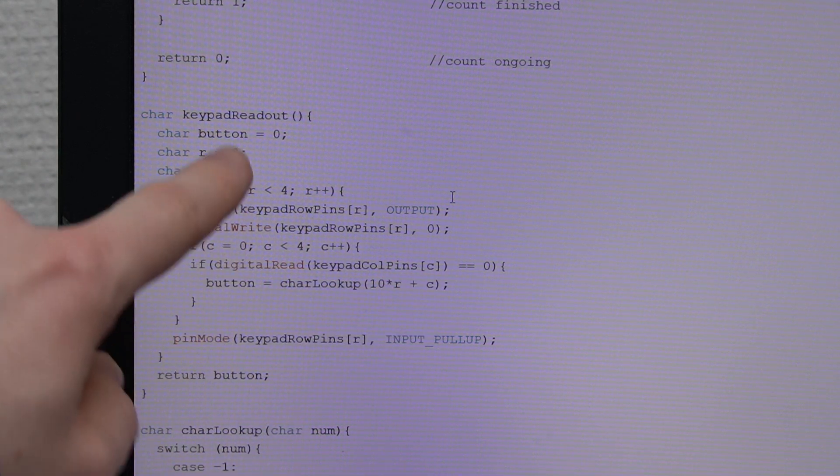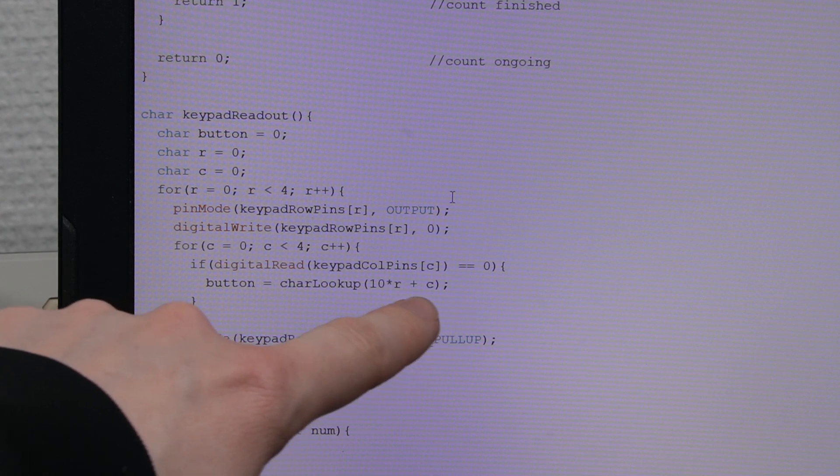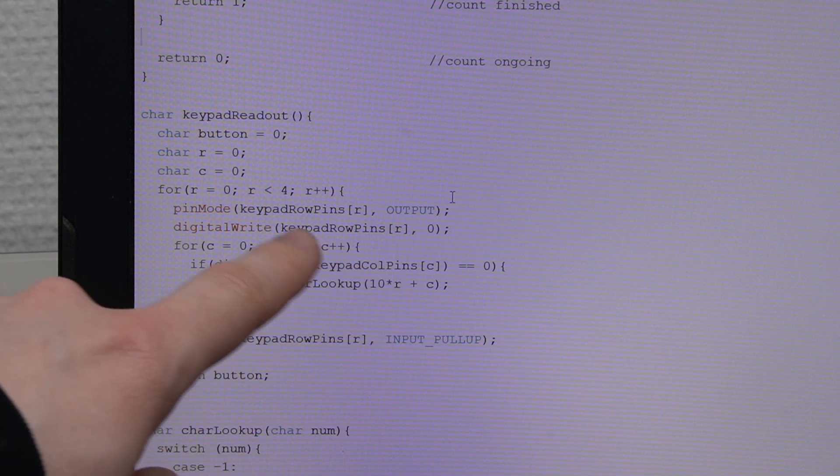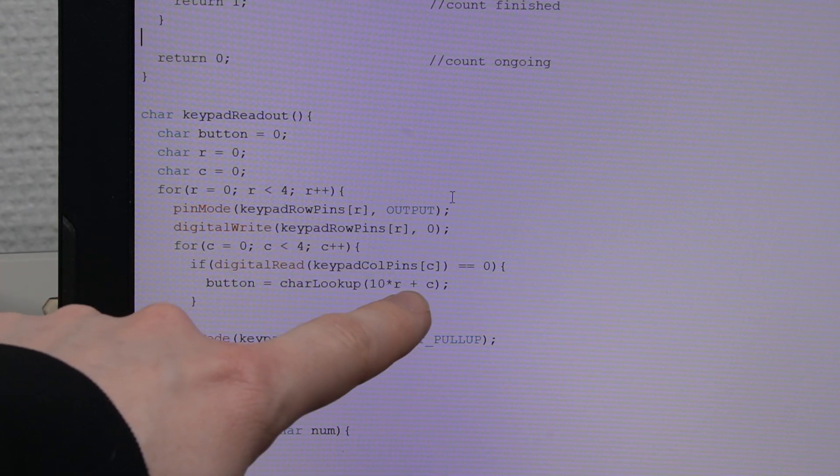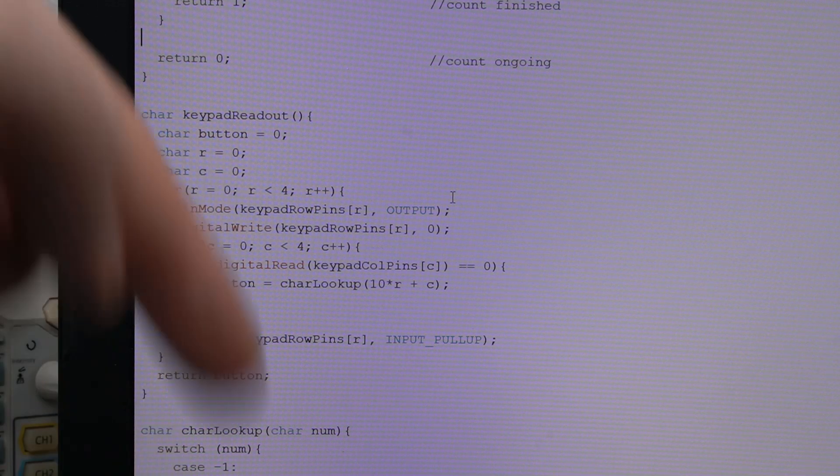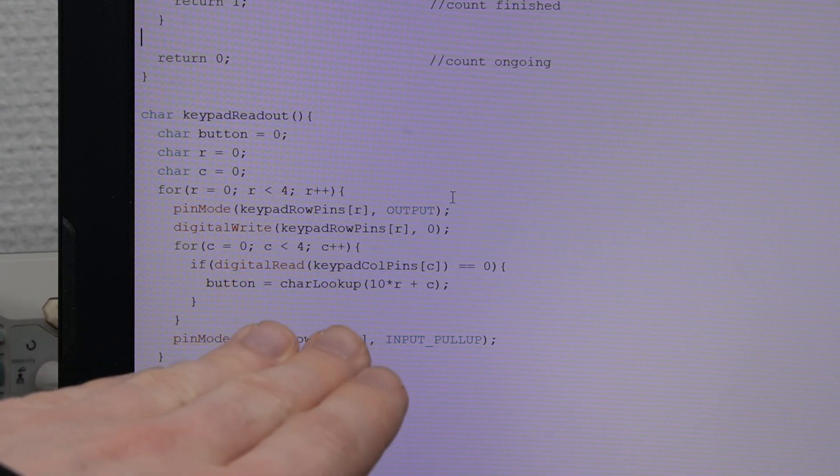then my button variable gets assigned that expression here, which is just 10 times the row and plus the column. So that's just a way for me to assign it a unique number for each key. This is just gibberish without a lookup table.